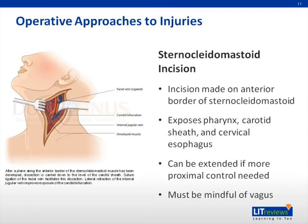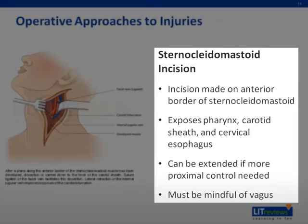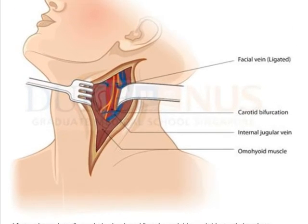Once the decision has been made to proceed with neck exploration, the approach depends on the type of injury present. The most common incision is the sternocleidomastoid incision, made on the anterior border of the sternocleidomastoid. This allows for exposure of the pharynx, the carotid, and the cervical esophagus. In cases where more proximal vascular control is necessary, the incision can be extended caudally. When making the incision, one must be mindful of the vagus nerve, as it sits in close proximity to most structures of interest. As you can see in this diagram, the sternocleidomastoid incision provides good exposure to almost all structures of the neck.